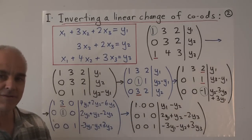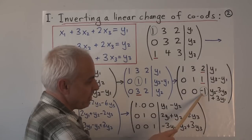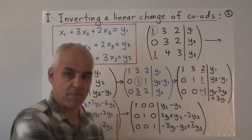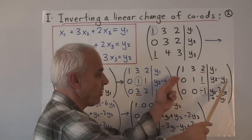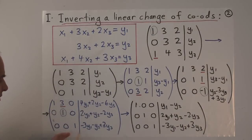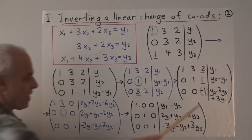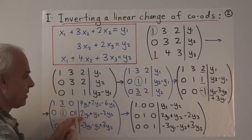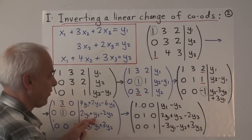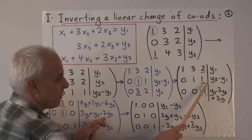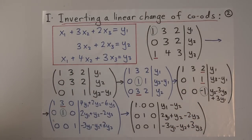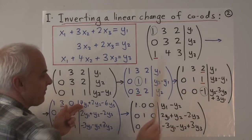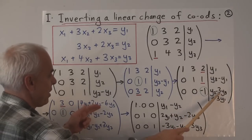Now we're going to carry on and do back substitution. First, we're going to multiply by minus 1 to make that leading entry a 1, and then use this entry to eliminate the entries above it by adding multiples of this row to the rows above it. We've multiplied that third row by minus 1. Adding this row to the row above gives us 2y1 plus y2 minus 2y3. And to get rid of this 2 here, we'll take 2 times this row and add it to this one, giving us 7y1, 2y2 minus 6y3.